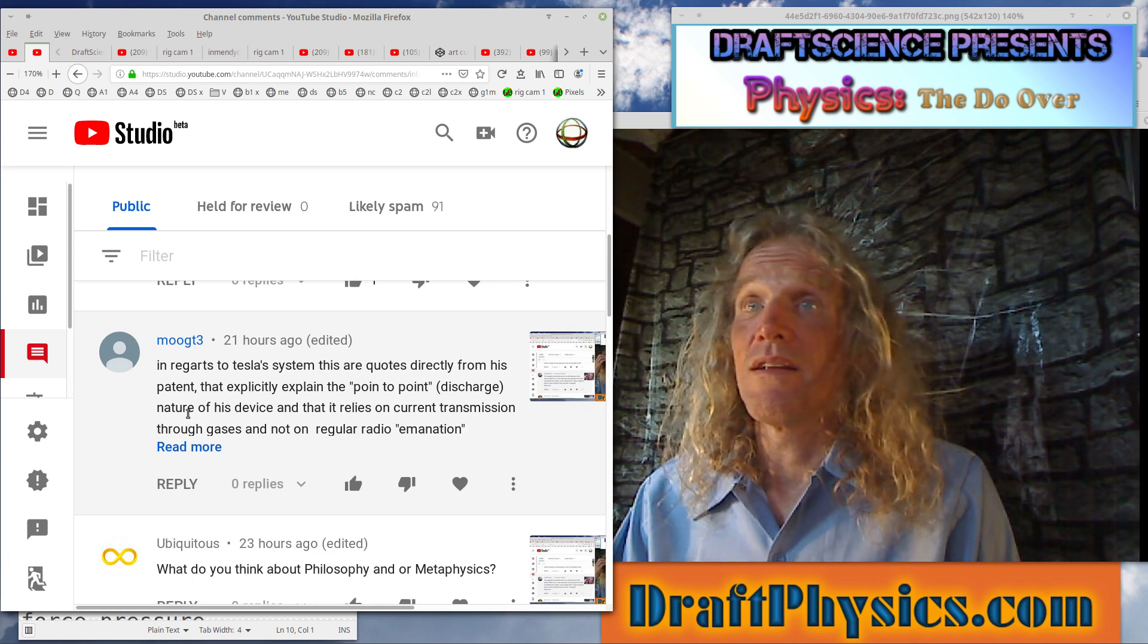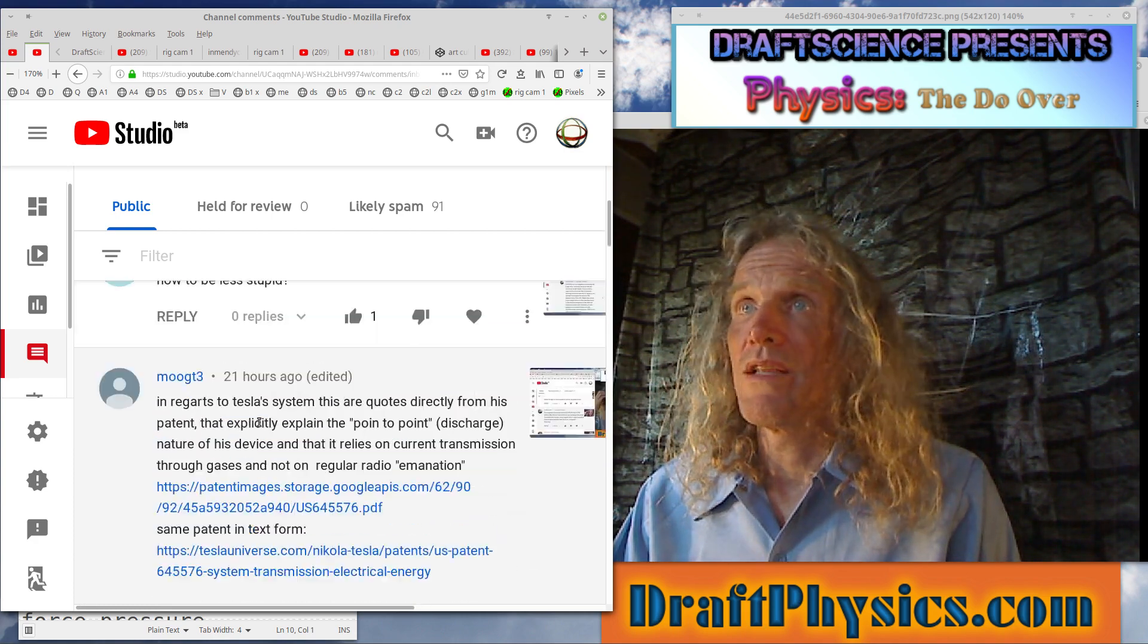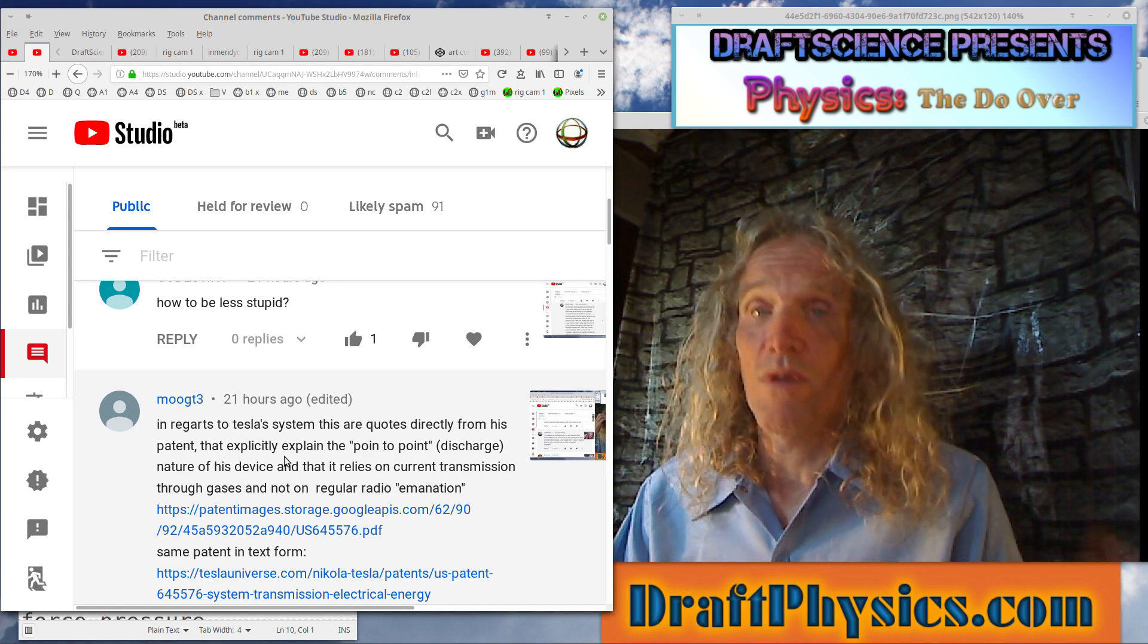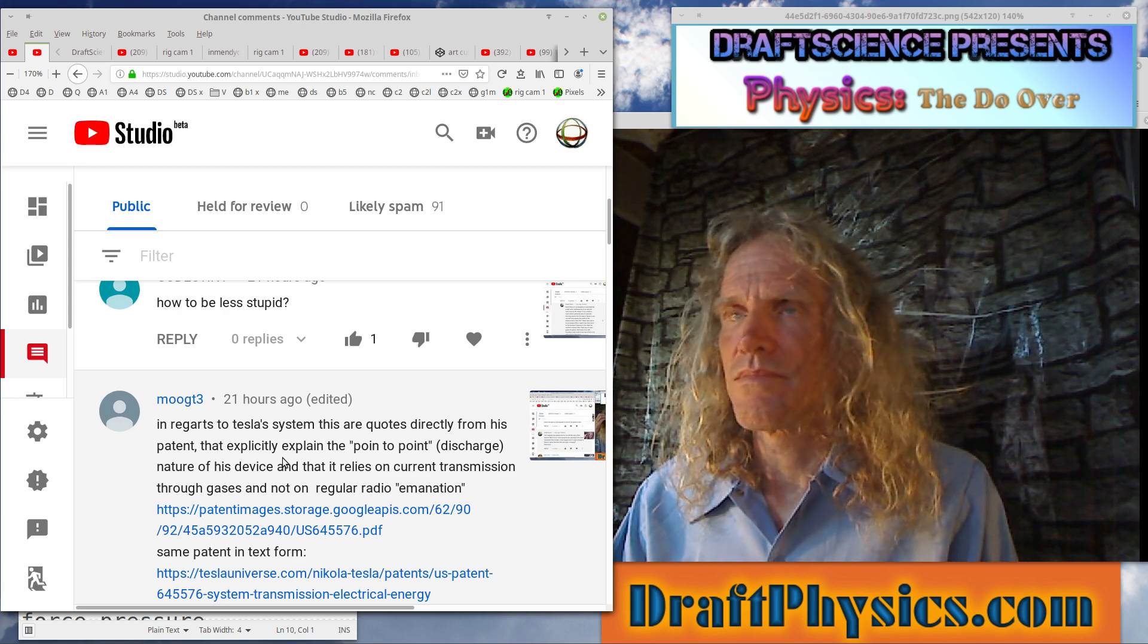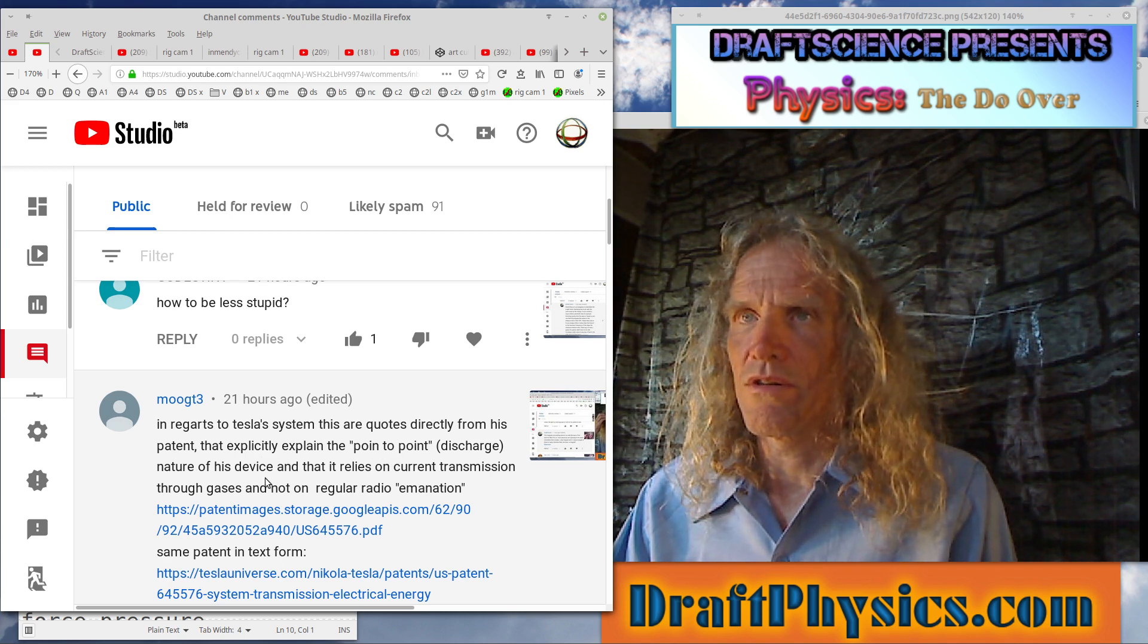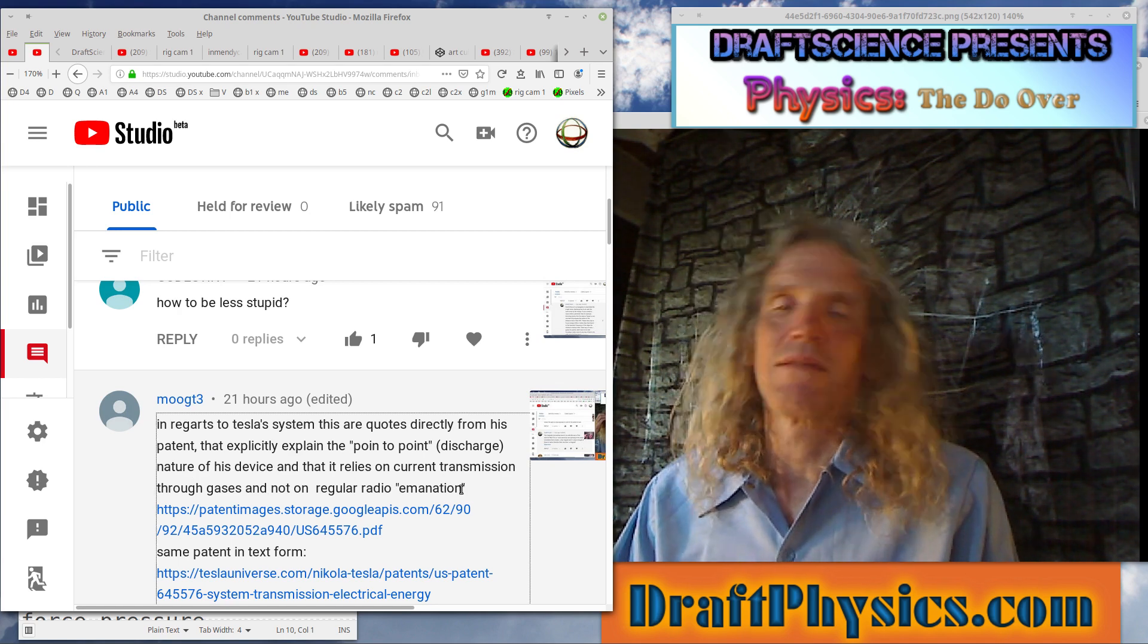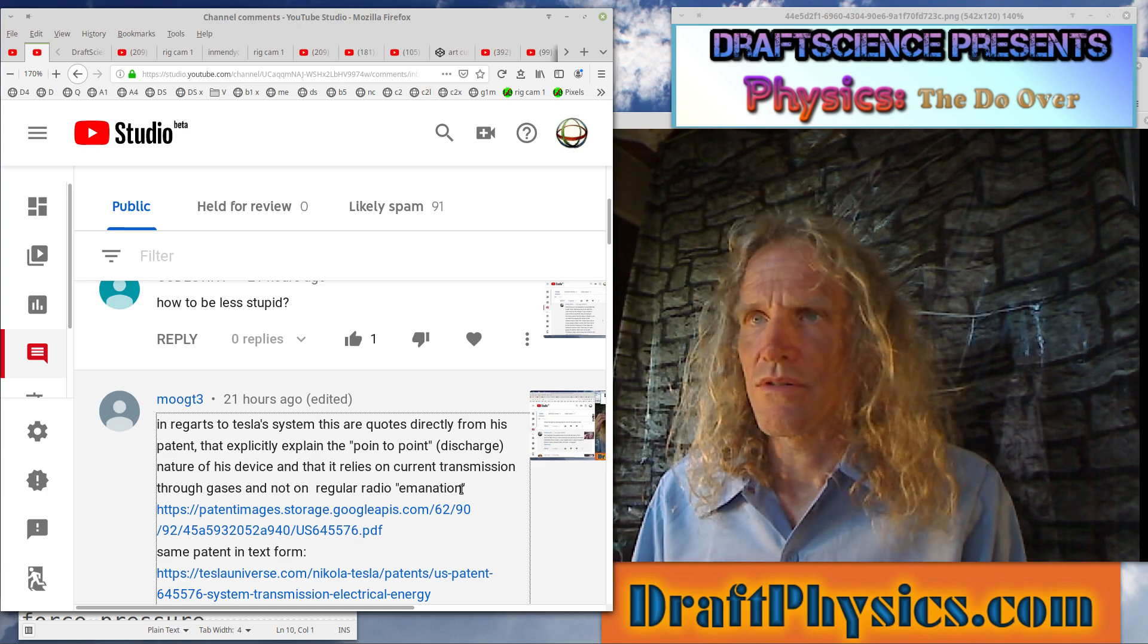These comments are just terrible. All right, here's a 458 page long blah blah blah of Tesla crapola. So, we'll read the preface. In regards to Tesla's system, these are the quotes directly from his patent. Okay, let's understand, he had 400 patents. So, he patent lots of crazy ideas. So, this is one particular one. Now, later he argued that he could do this same thing, person to person, which is silly. But anyway, that explicitly explains the point to point discharge nature of his device. There was no device. And that it relies on current transmission through gases and not on regular radio emulation. Yes, of course, he's trying to send essentially invisible lightning from point to point through the upper atmosphere.